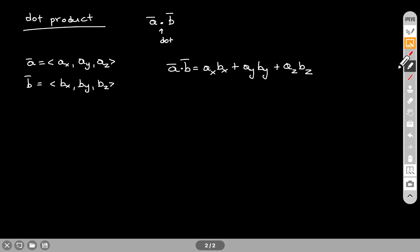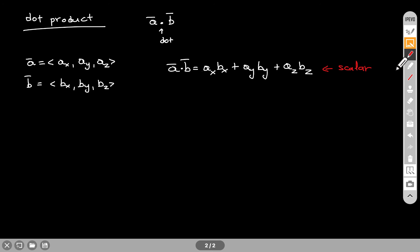One thing you need to pay attention to here: there are no brackets. The only thing you have is a number times a number, plus a number times a number, plus a number times a number. At the end, this is going to give you a number — the dot product is going to give you a scalar. Even though you calculated the dot product between two vectors, at the end you will not get a vector. You're going to get a scalar.